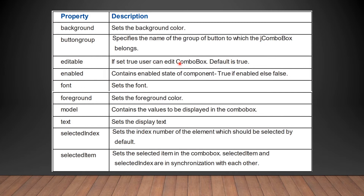If the editable property is set to false, the user cannot edit the combo box. The enabled property contains the enabled state of the component — true if enabled, false if not. The font property sets the font. The foreground property sets the foreground color of the JComboBox.